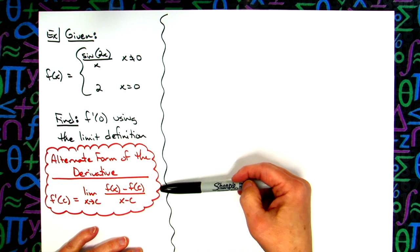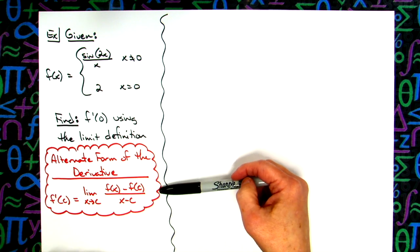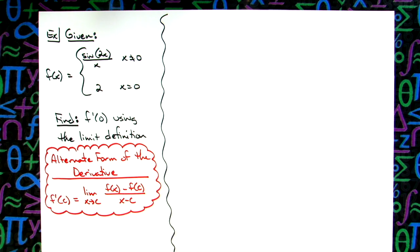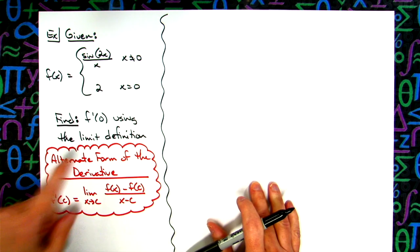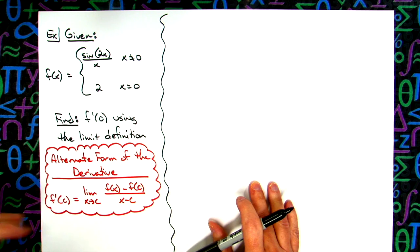Now I am going to choose to use the alternate form of the derivative on this one, because I just think it's going to be a lot easier here, especially since we know f of 0 is 2.